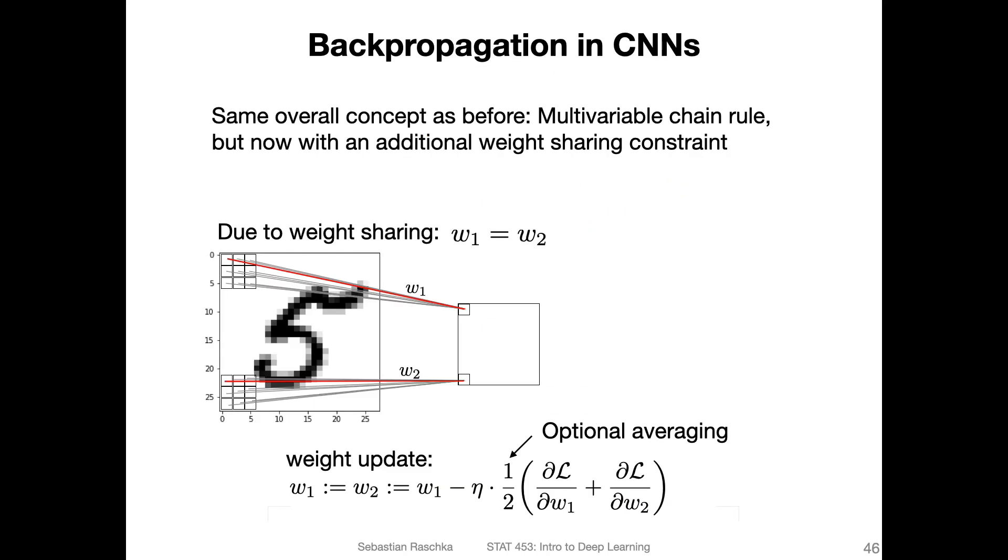what's essentially happening is that we are sliding our filter kernel over the image. So here, this is the convolution when we are sliding it over the image. And like I said before, the kernel is a matrix. In this case, it's a three by three matrix, and we are using the same weights. So here we have nine weights that we are reusing.